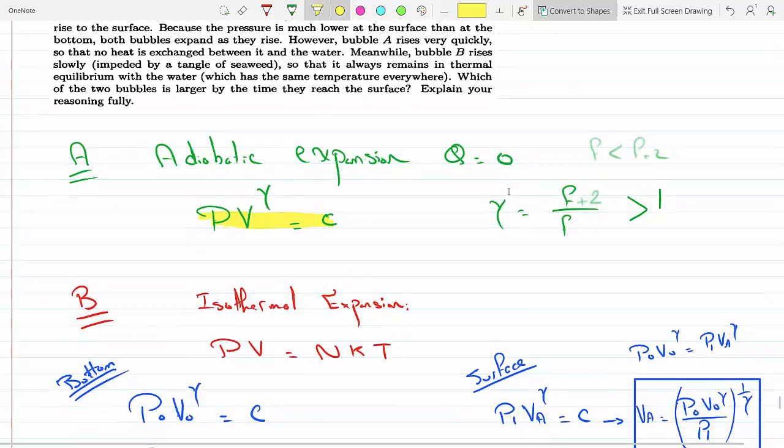Bubble B is in equilibrium with the water, so it's isothermal because the temperature does not change, so it obeys the ideal gas law PV equals NKT.